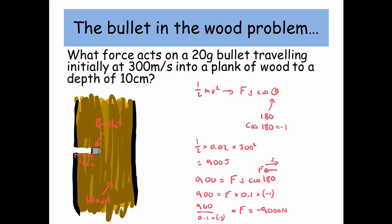We rearrange everything and we get 900 divided by 0.1 times minus 1 is equal to the force, which is minus 9,000 newtons. Just the same as before, just a different method.